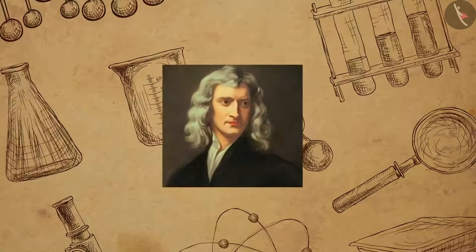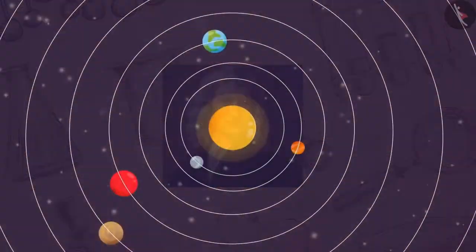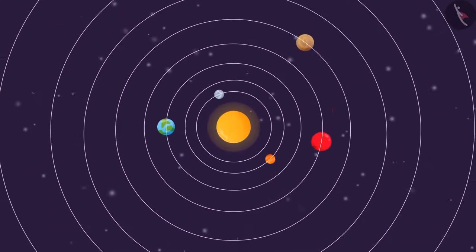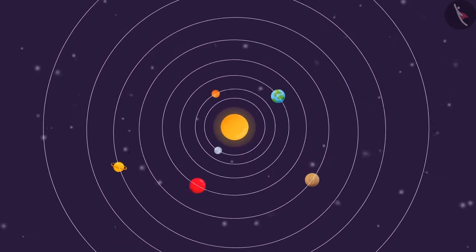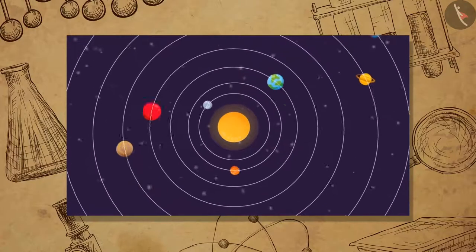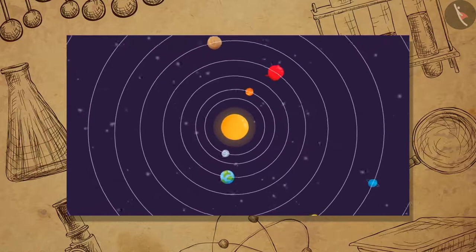It was Newton who explained that the cause of planetary motion is due to the gravitational force that the sun exerts on them. Now can you tell why the universal law of gravitation is universal in nature? It is because the law is applicable to all the bodies in the universe.